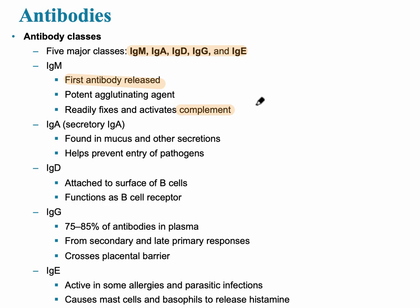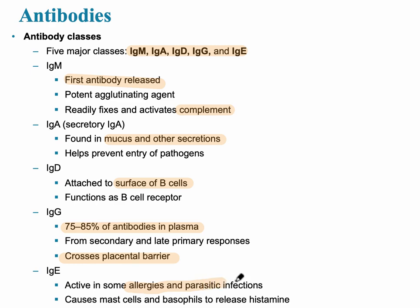IgA is naturally found in mucus and other body secretions, helping to prevent the entry of pathogens. IgD attaches to the surface of B lymphocytes. IgG is the most common, making up about 75 to 85 percent of antibodies in the plasma, and it crosses the placental barrier — linking it to natural passive humoral immunity. Finally, IgE is active in some allergies and parasitic infections and triggers mast cells and basophils, which release histamine from their granules.